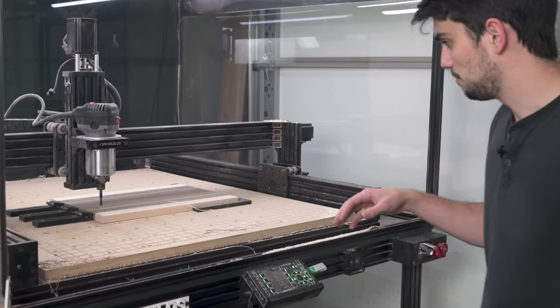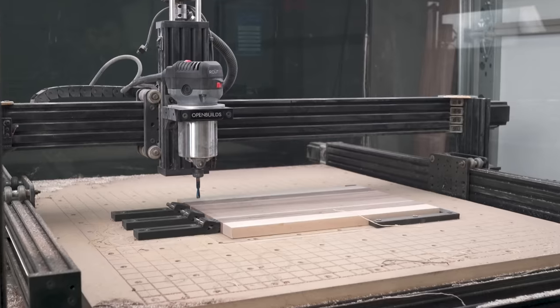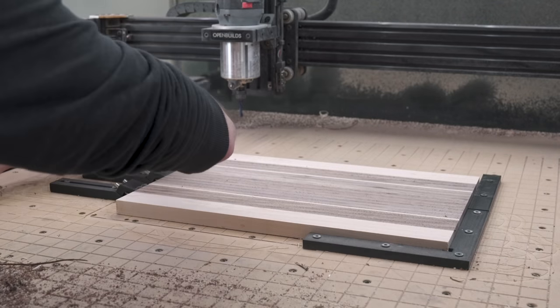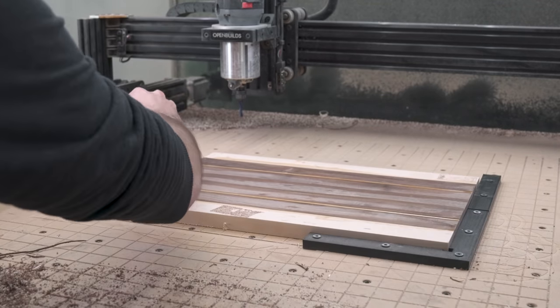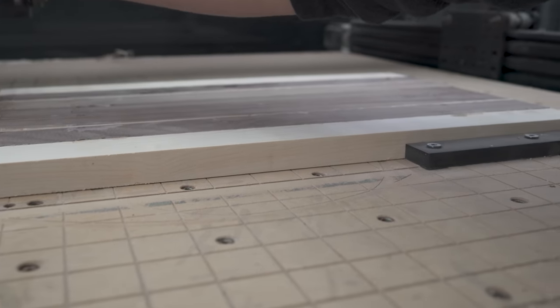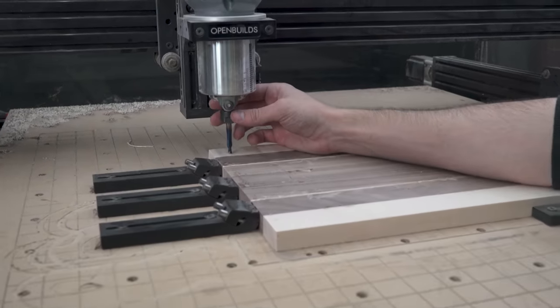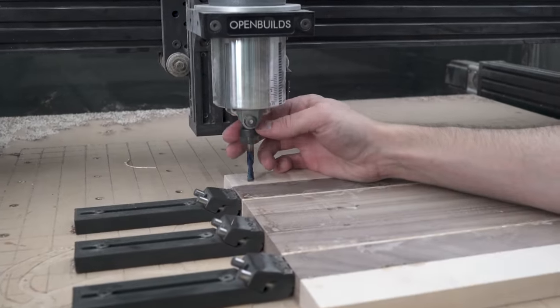So this is all finished, just need to flip it around now. That machine side sits super flat now, that's a good sign. I'm just going to re-zero it since it's a little bit thinner now.